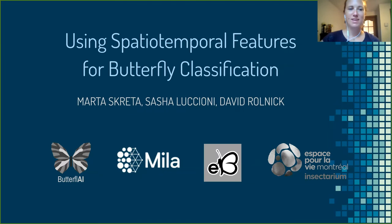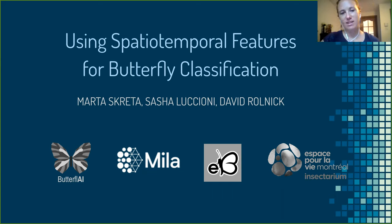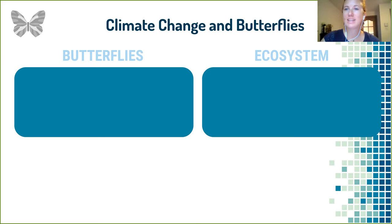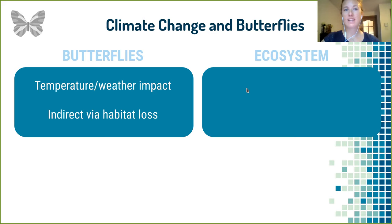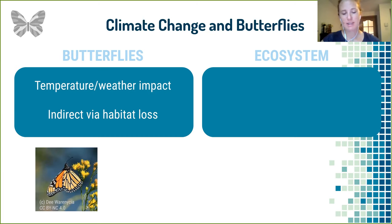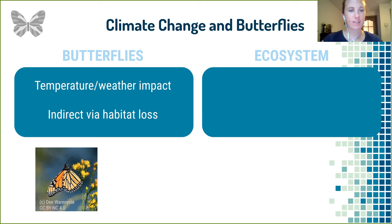The first project, formally called Using Spatio-Temporal Features for Butterfly Classification, is a joint project between MILA, the eButterfly project, and the Montreal Insectarium. What's the link between butterflies and climate change? Butterflies are impacted by changing temperatures, weather, and habitat loss due to urbanization. Especially monarchs — North American monarchs migrate from Mexico all the way up to Canada every year — and their numbers are dwindling, which is a big loss because they're key pollinators.